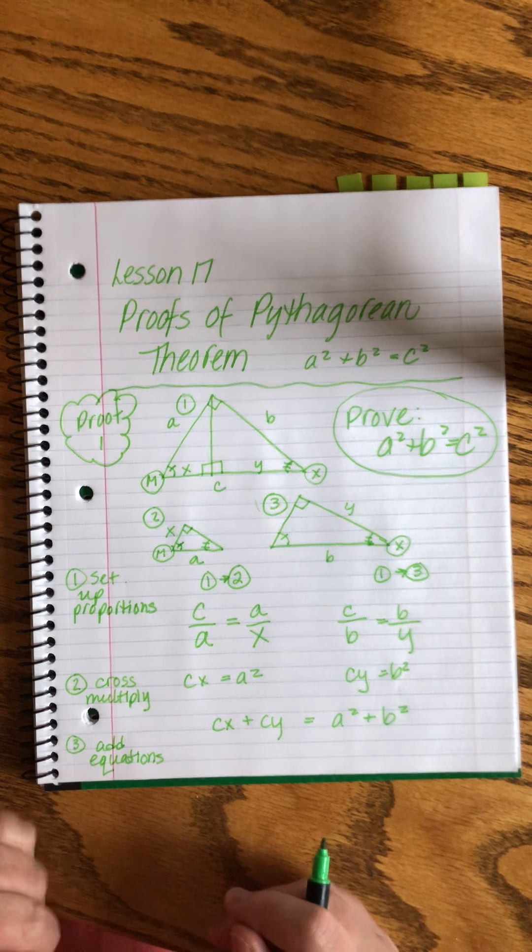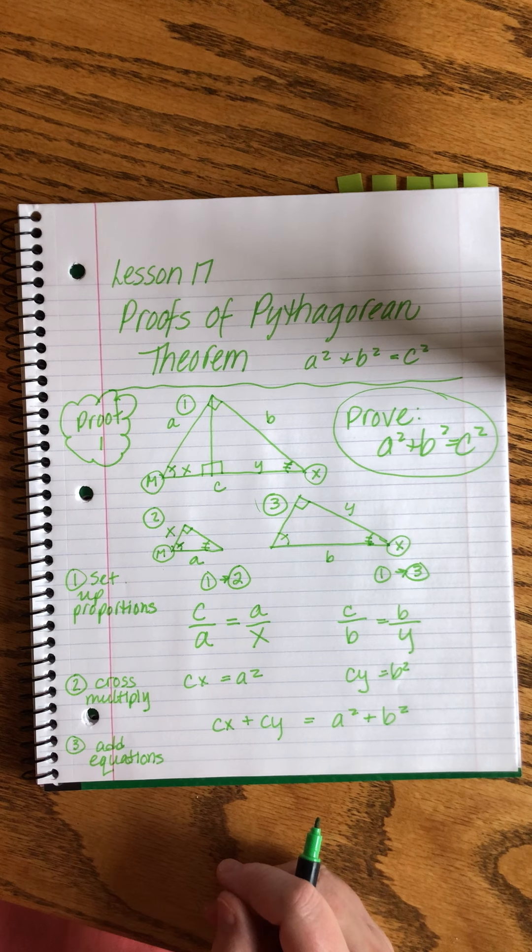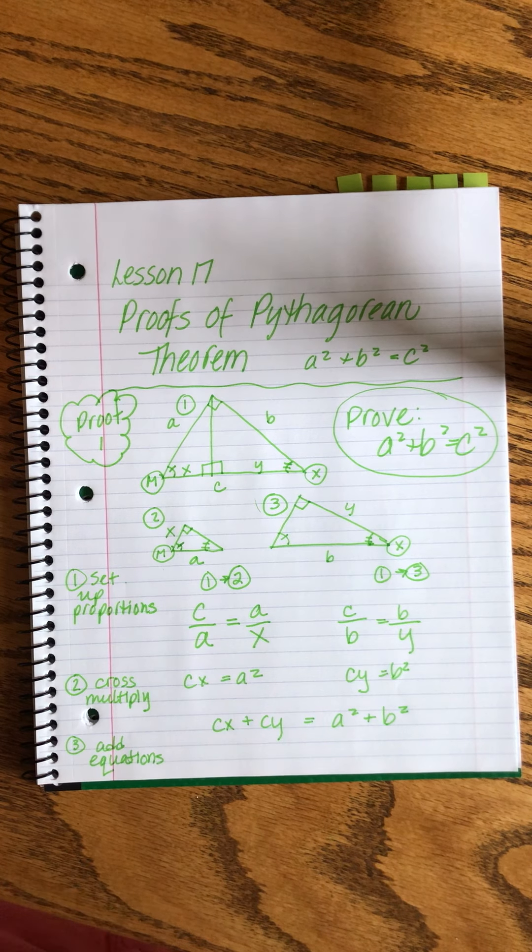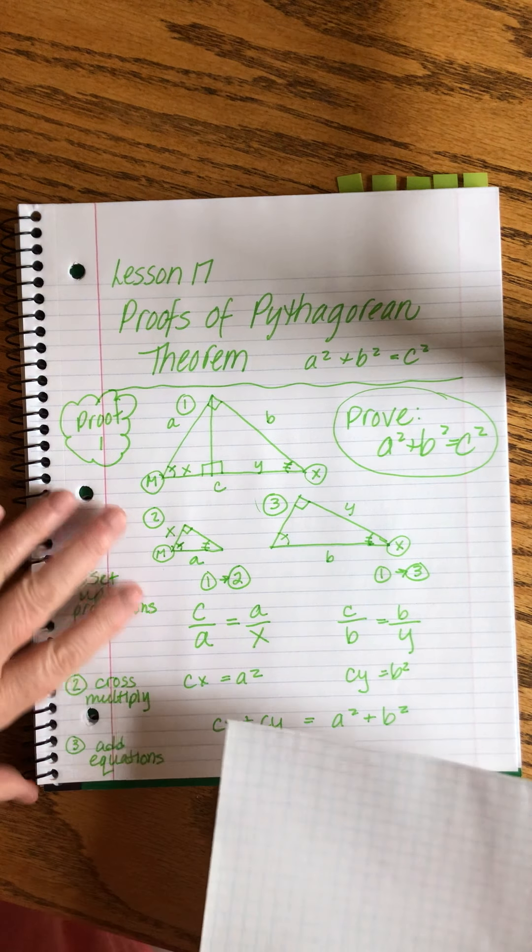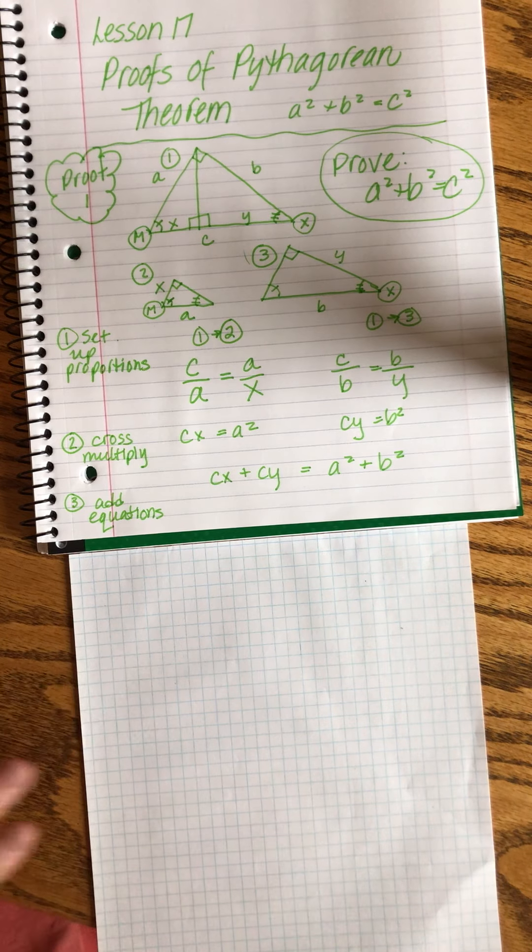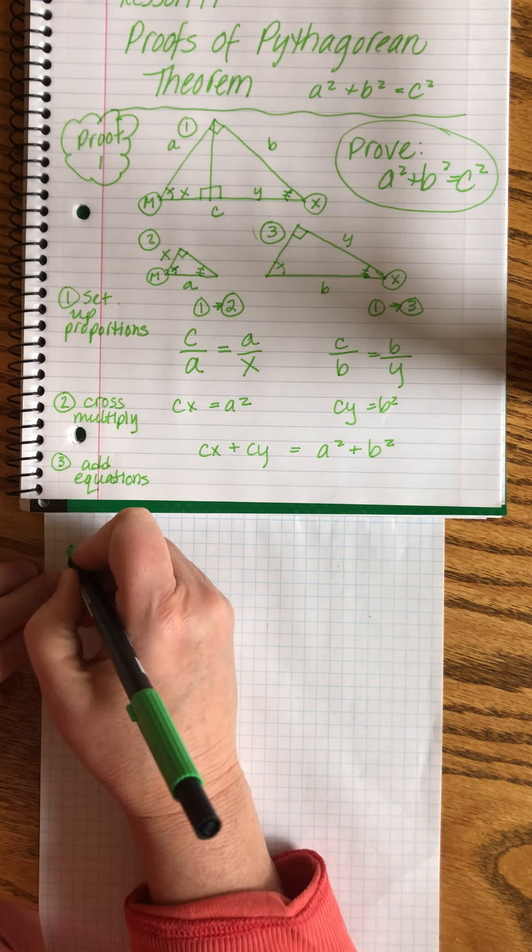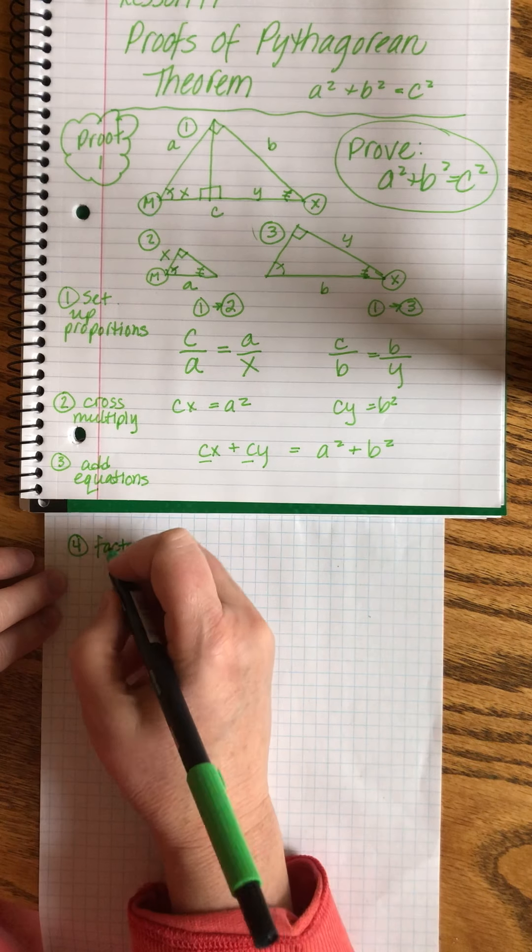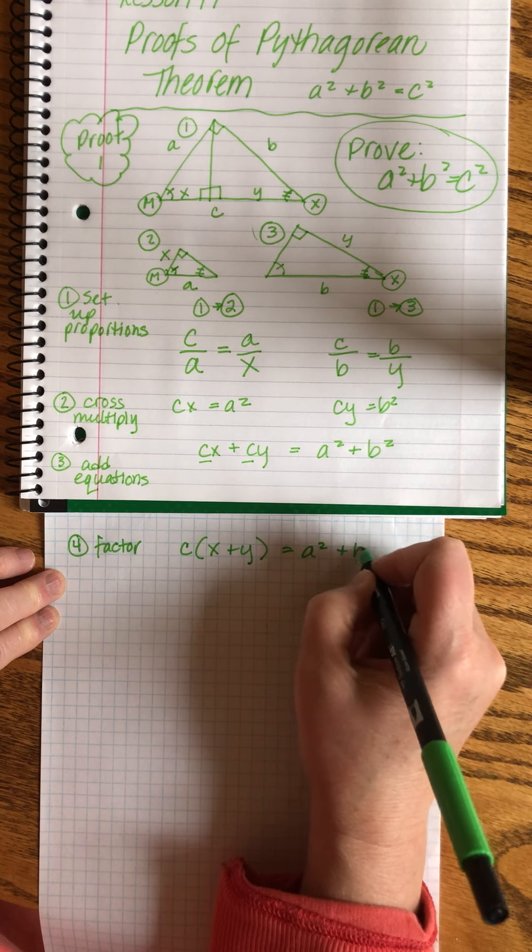Now shoot, I really don't want to turn the page. I'm going to keep going on this piece of paper. I want to be able to reference what we've done here. Okay, keep going on this page. All right. So I added the equations together. Now for my next step, I'm going to factor on the left side, I'm going to factor that c.